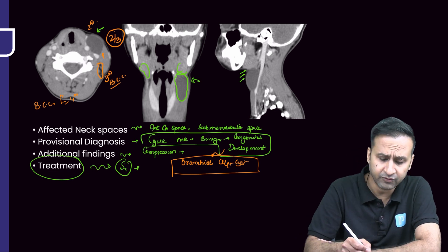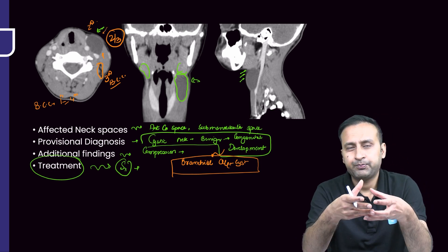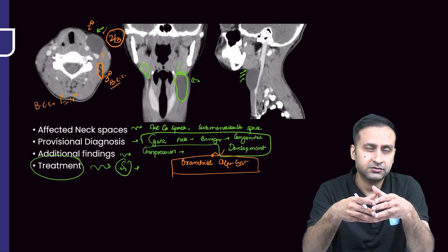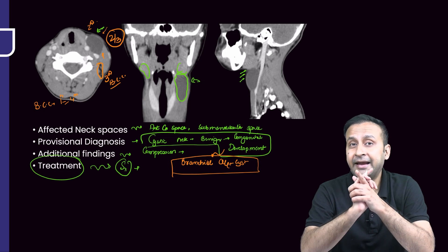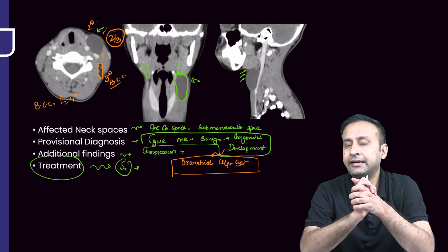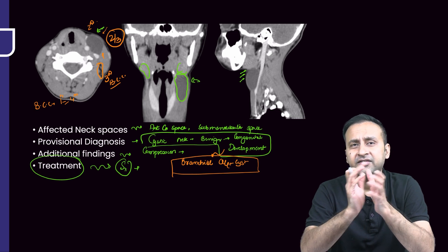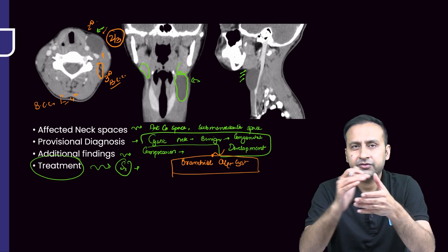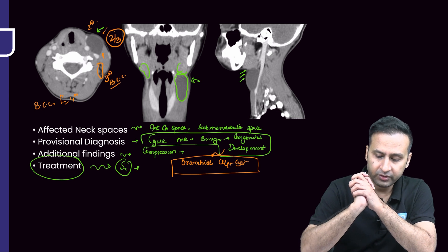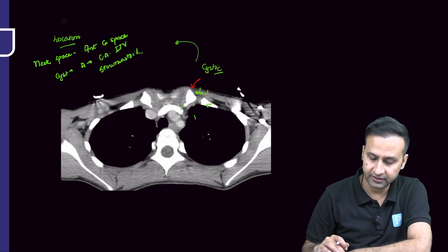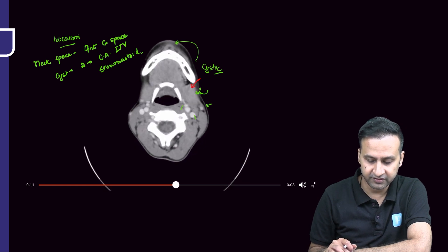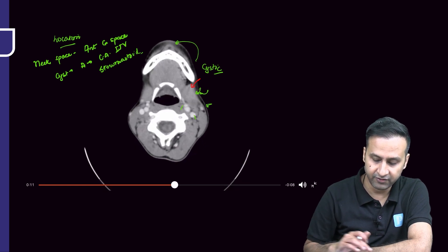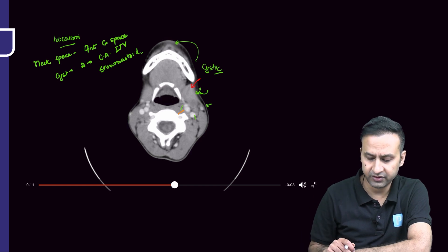A unilocular cyst present in an asymptomatic child, typically during early years, with no complexities, located anterior to the sternocleidomastoid — this is a very important word, anterior — is going to be a type 2 branchial cleft cyst. It is said to be located in the region of the angle of the mandible and anterior to the sternocleidomastoid. Now one very important sign described in type 2 branchial cleft cysts: in this case, the cyst ends at the level of the carotid bifurcation.